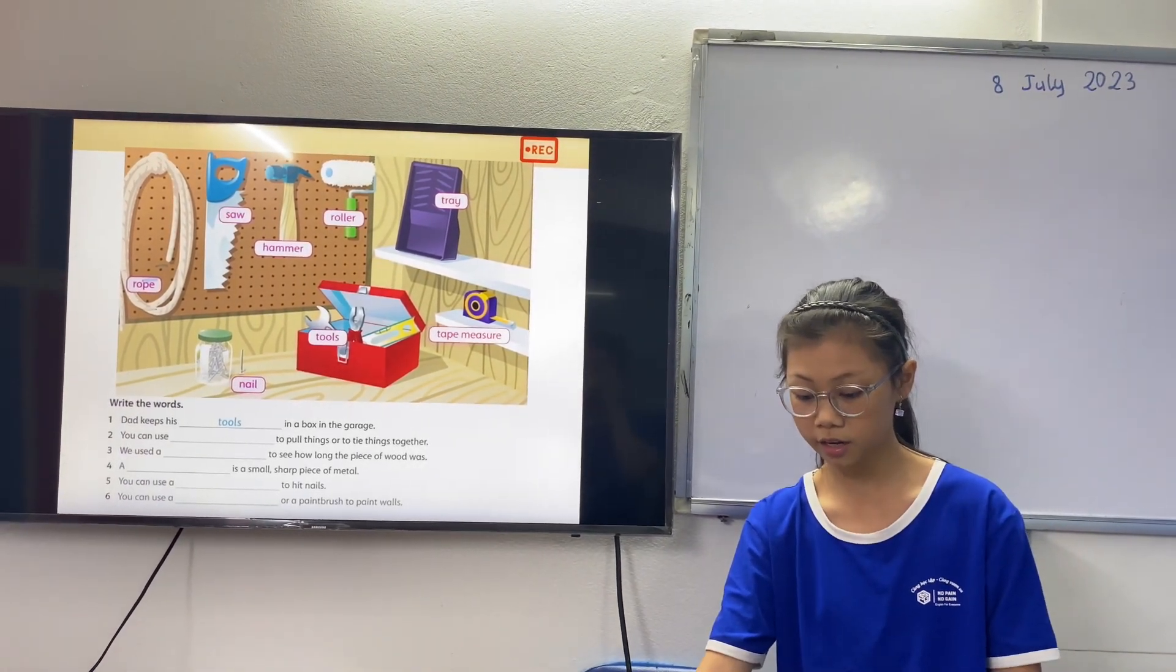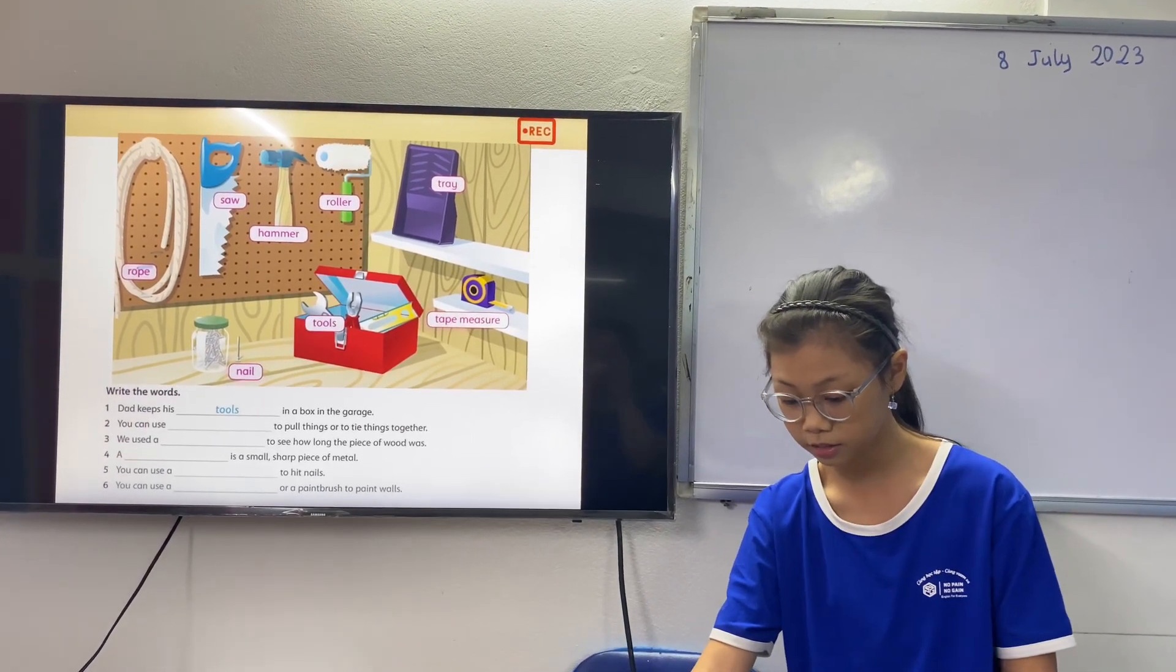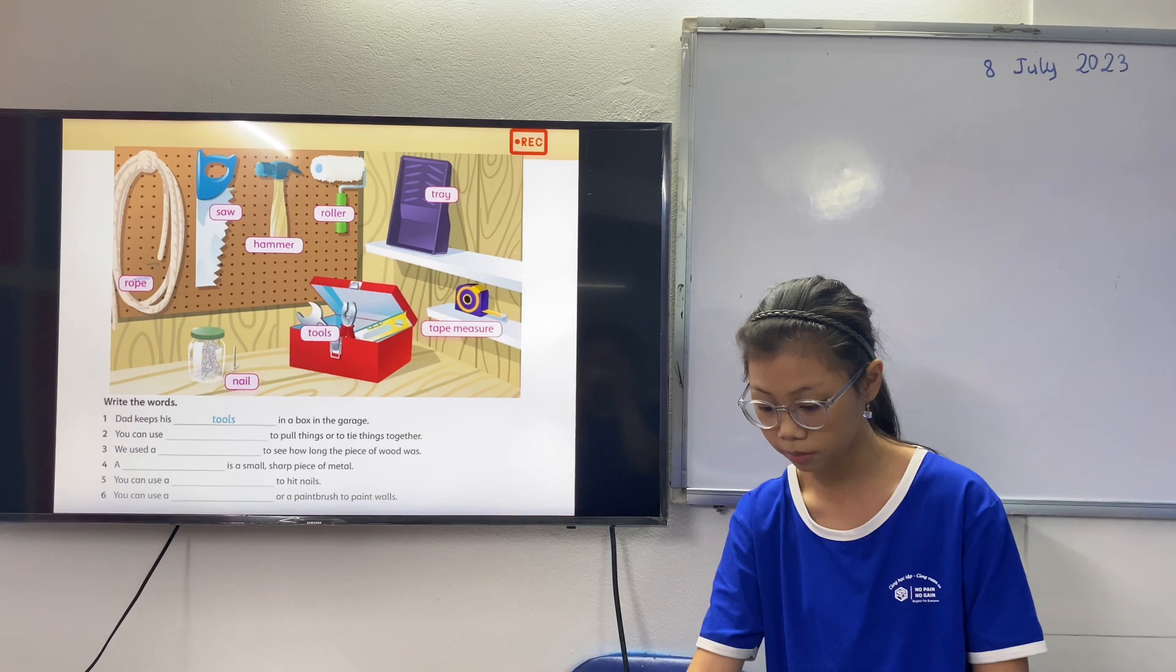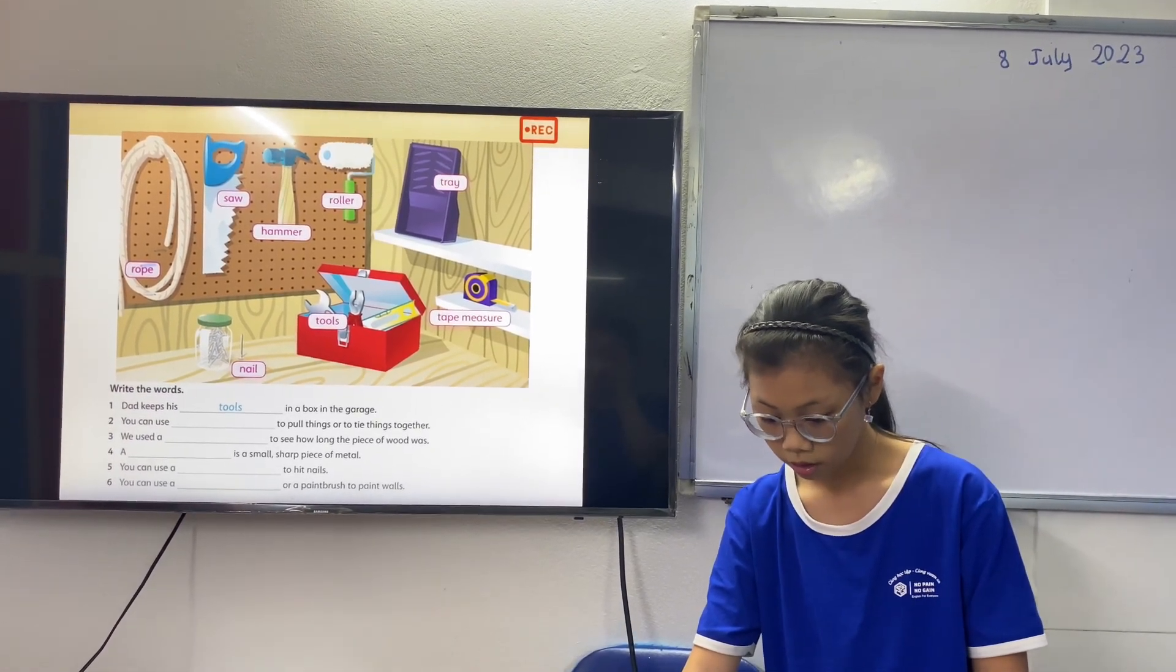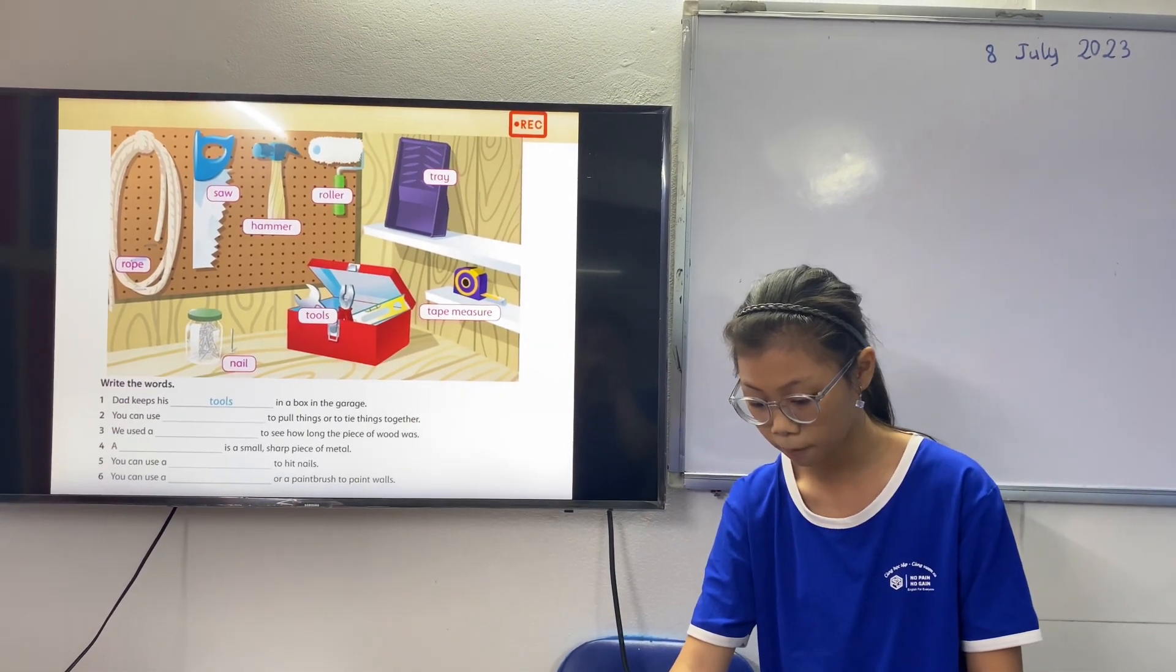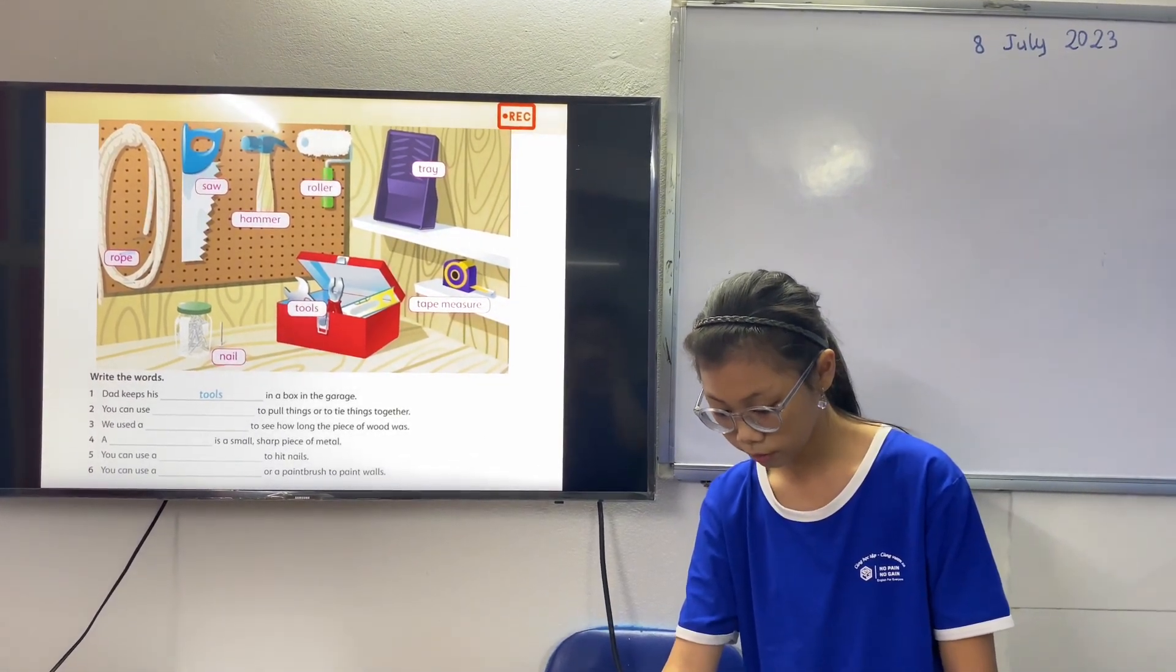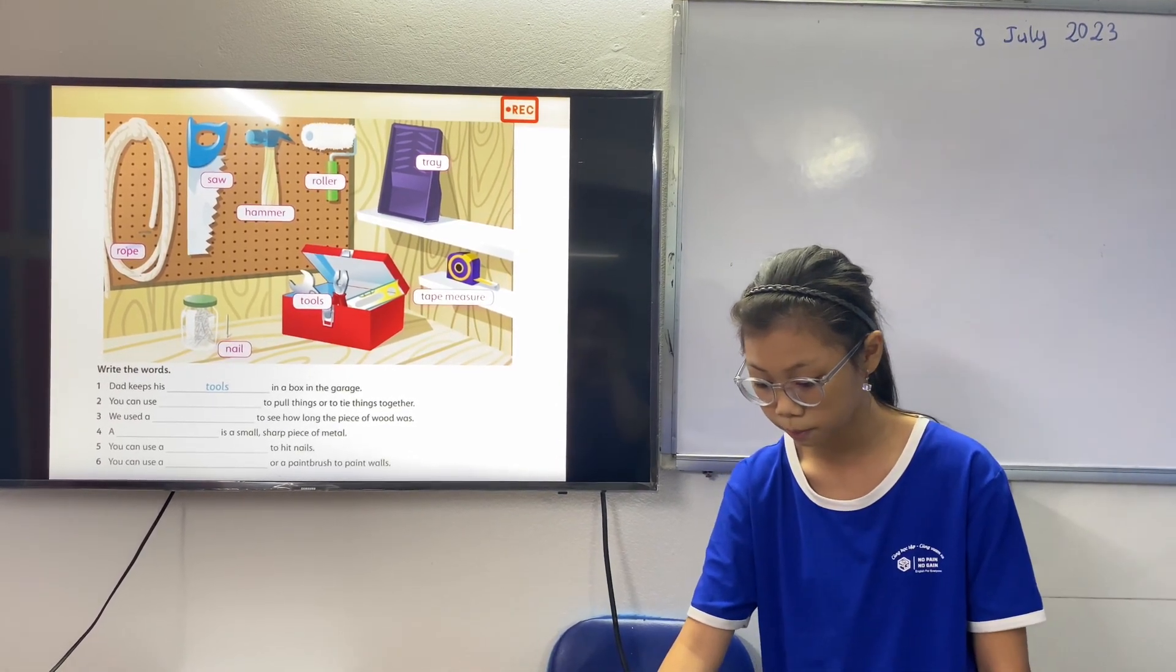You can use the rope to pull things or to tie things together. You can use the tape measure to see how long the piece of wood is. The nail is small, sharp piece of metal. You can use the hammer to hit the nail. You can use the roller or a paint brush to change the wall.